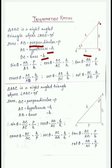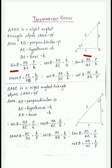Now, what is the relation? Sin theta equals P by H — perpendicular by hypotenuse. Cos theta equals B by H — base by hypotenuse. Tan theta equals P by B — perpendicular by base.